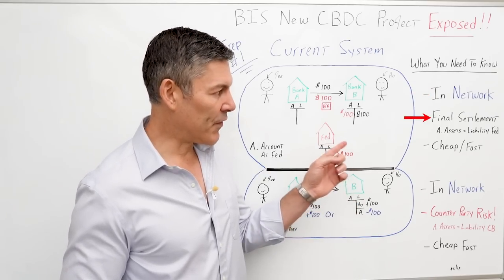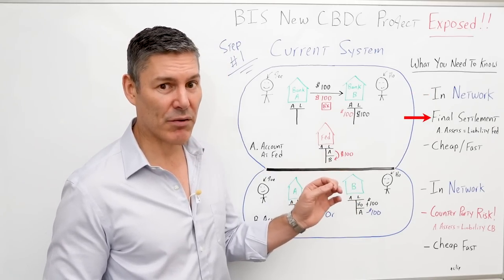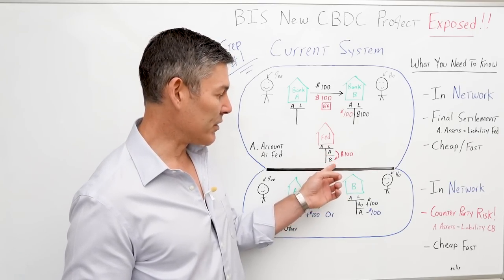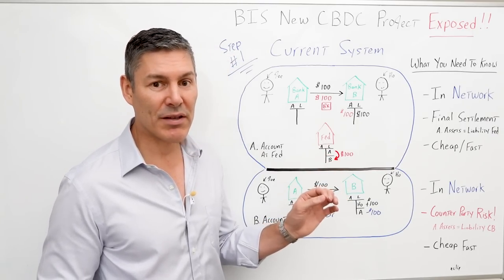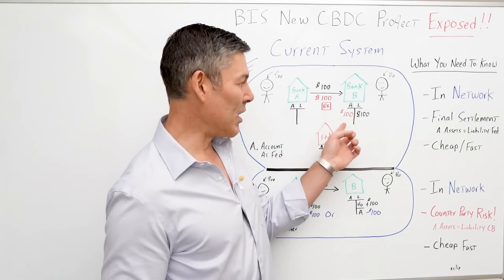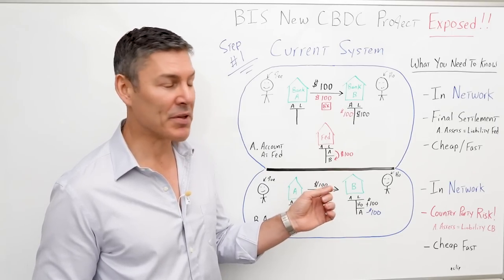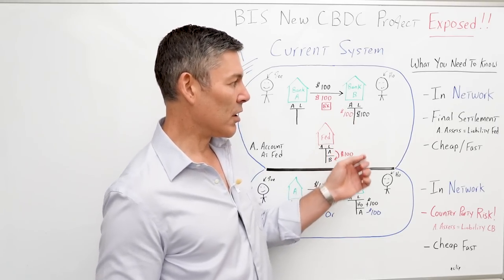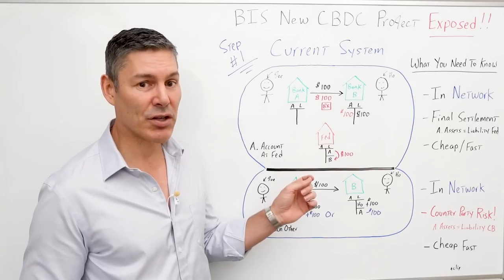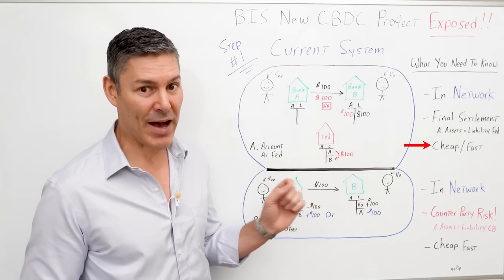They settled on the Fed's balance sheet by transferring those bank reserves denominated in dollars from Bank A's account down to Bank B. This is basically the equivalent of Bank A giving Bank B a $100 bill to compensate for that $100 liability they sent them. This transaction would be very cheap and fast.